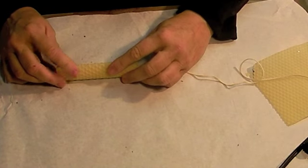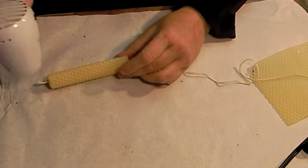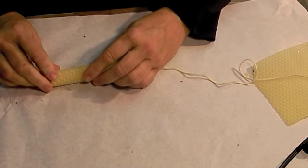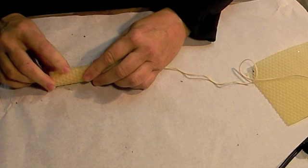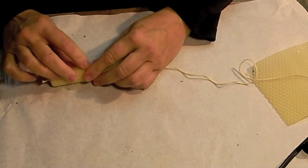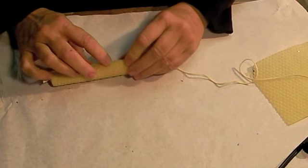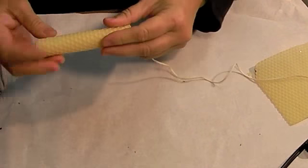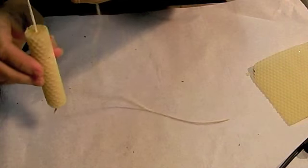My camera died there, my camera battery died so once you get this rolled up we're just going to hit that with the heat for just like a couple of seconds just to soften the edges and then press them down into the beeswax. And there you have the first end of the taper.